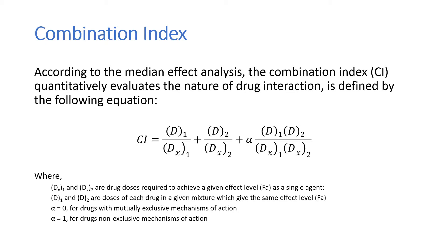According to the median effect analysis, the combination index, or CI, quantitatively evaluates the nature of drug interaction and is defined by the equation shown here. The denominators DX1 and DX2 are drug doses required to achieve a given effect level as single agents. The numerators D1 and D2 are doses of each drug in a given mixture which give the same effect level.